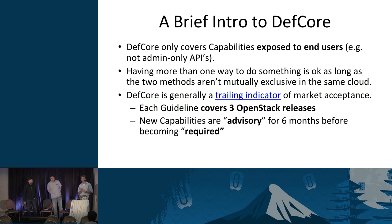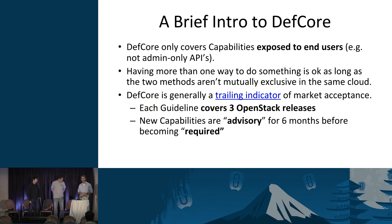DefCore only covers capabilities that are actually exposed to end users. There are a lot of things in OpenStack that are considered admin-only APIs, or things that happen on the back end that the user never sees. You wouldn't see DefCore making requirements around RPC messages, because end users never see those. For the same reason, provider networks in Neutron are generally admin-only. If a user can't actually use a capability, it doesn't go into the DefCore guidelines. This is really about end users.